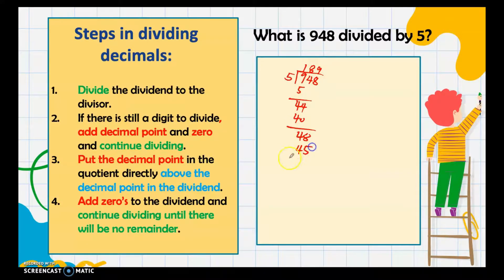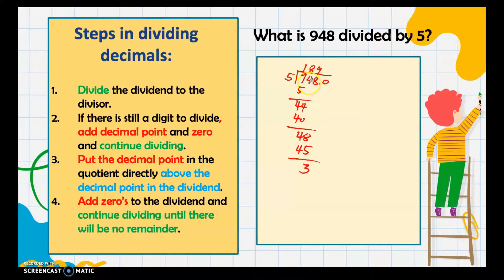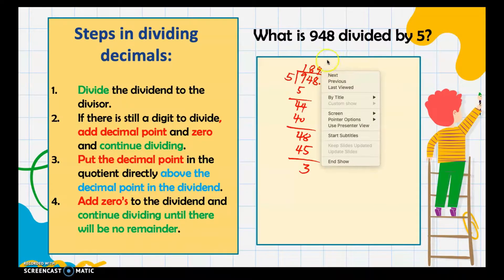We have a remainder of 3. The second step: if there is still a digit to divide, add a decimal point and zero, then continue dividing. Adding a decimal point at the end of 948 and then a zero does not change its value — it's still 948 — so we can continue. We put the decimal point in the quotient directly above the decimal point of the dividend.